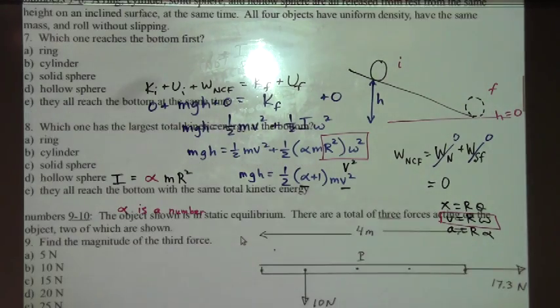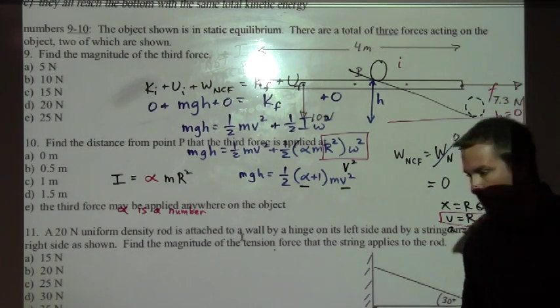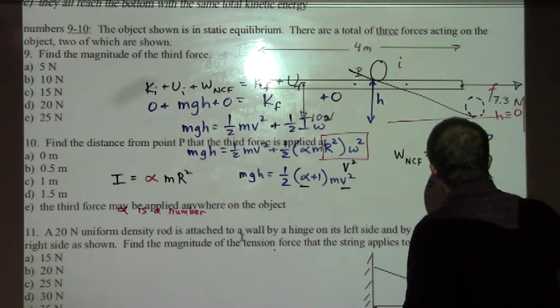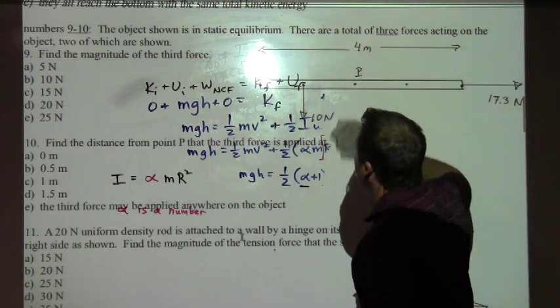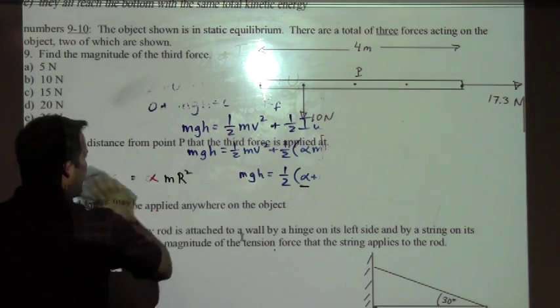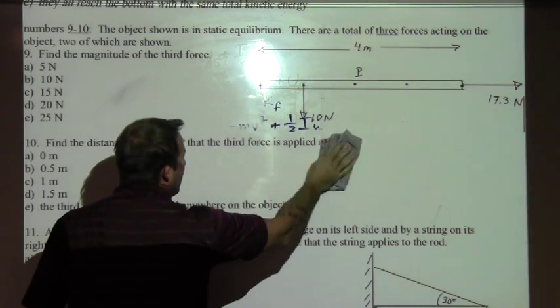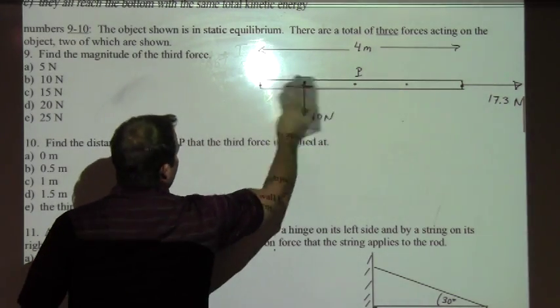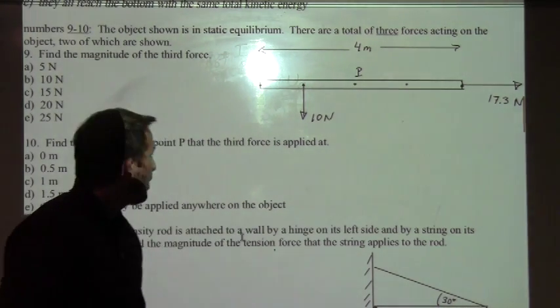Let's continue with problems 9 and 10 together. Let me clear this off. We've got an equilibrium problem here. It says we've got an object. It says that it is in static equilibrium, and static just means that it's stationary, not moving and continues to not move.